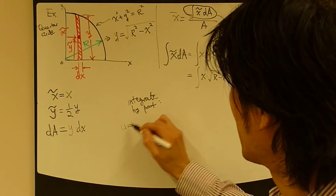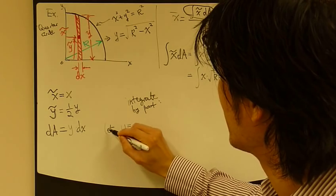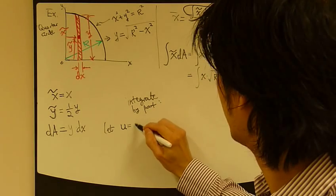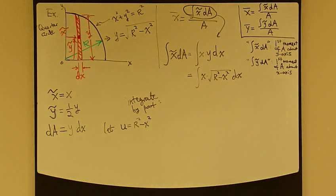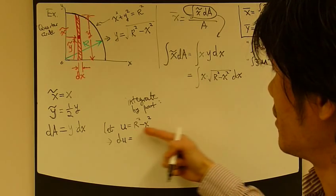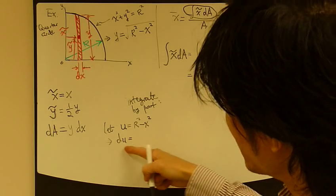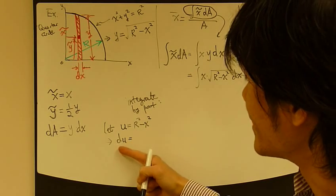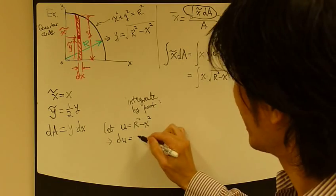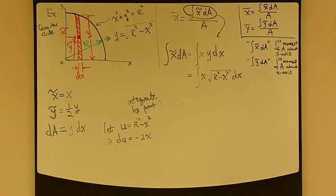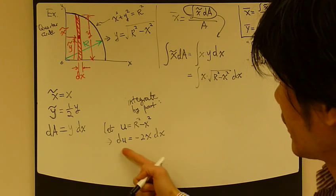How you do integration by part is that you define a quantity called u. Let u be what's inside of this square root, which is r squared minus x squared. So, du becomes, take the du of the whole thing, and then d this guy right here. Now, r is a constant, so d constant is zero. So, what's left is this guy right here. So, differentiate this guy. So, minus 2x dx.